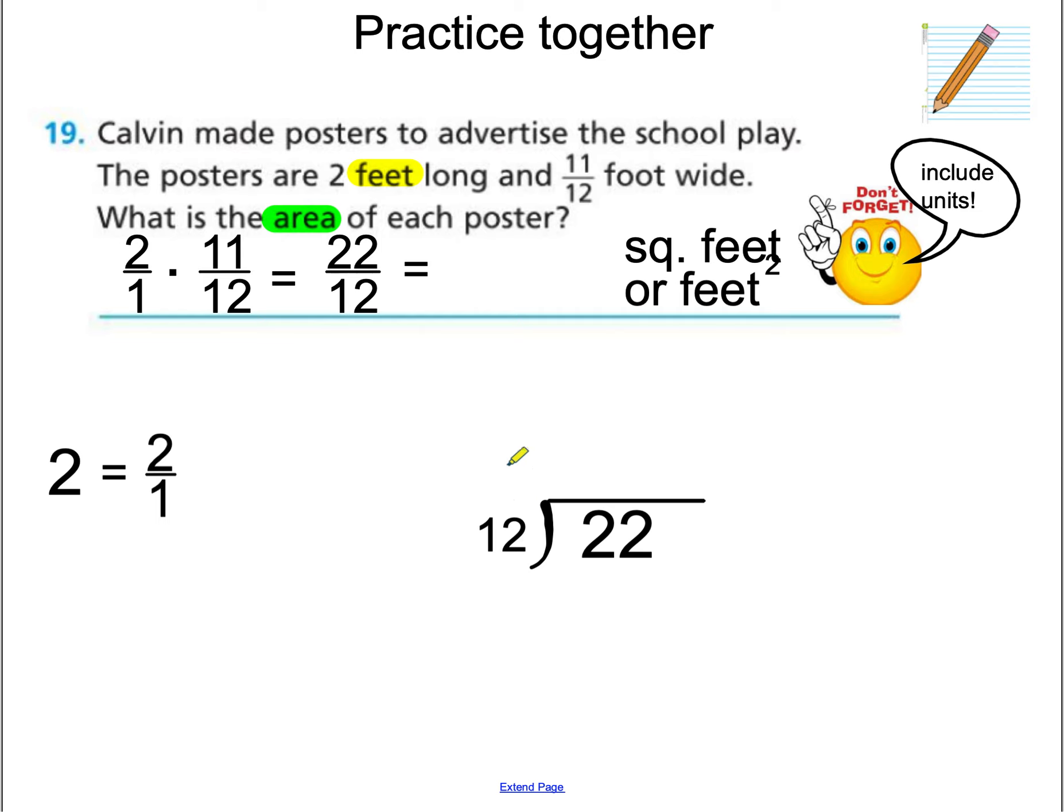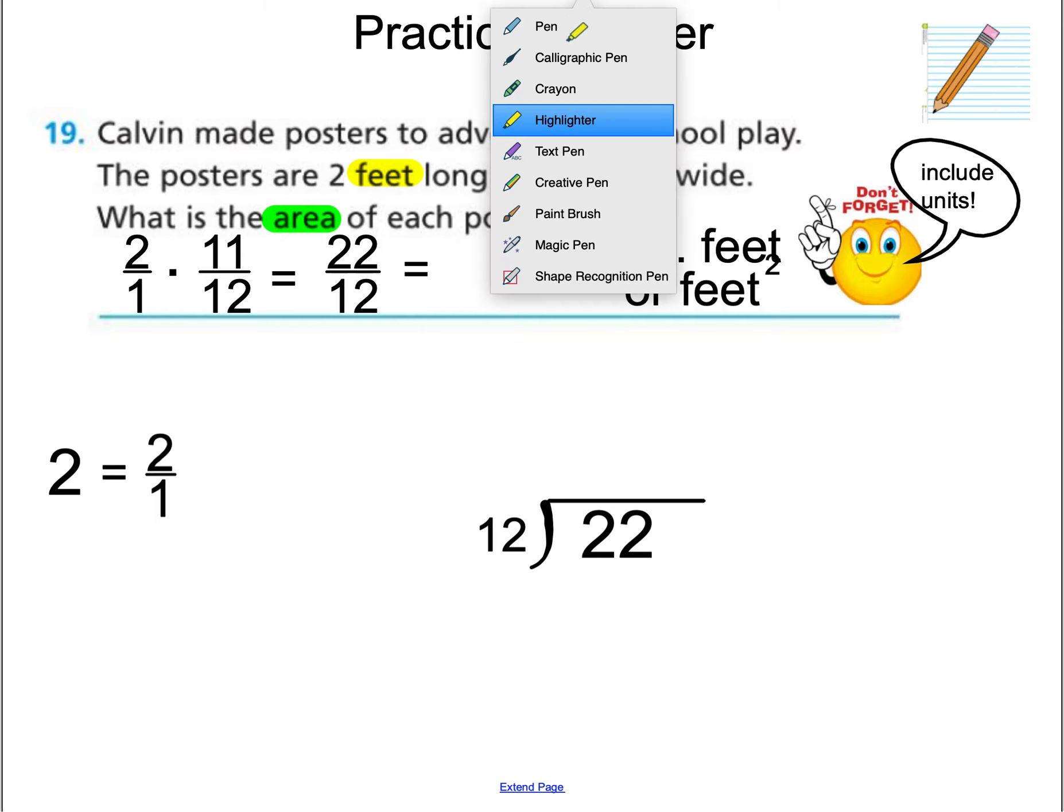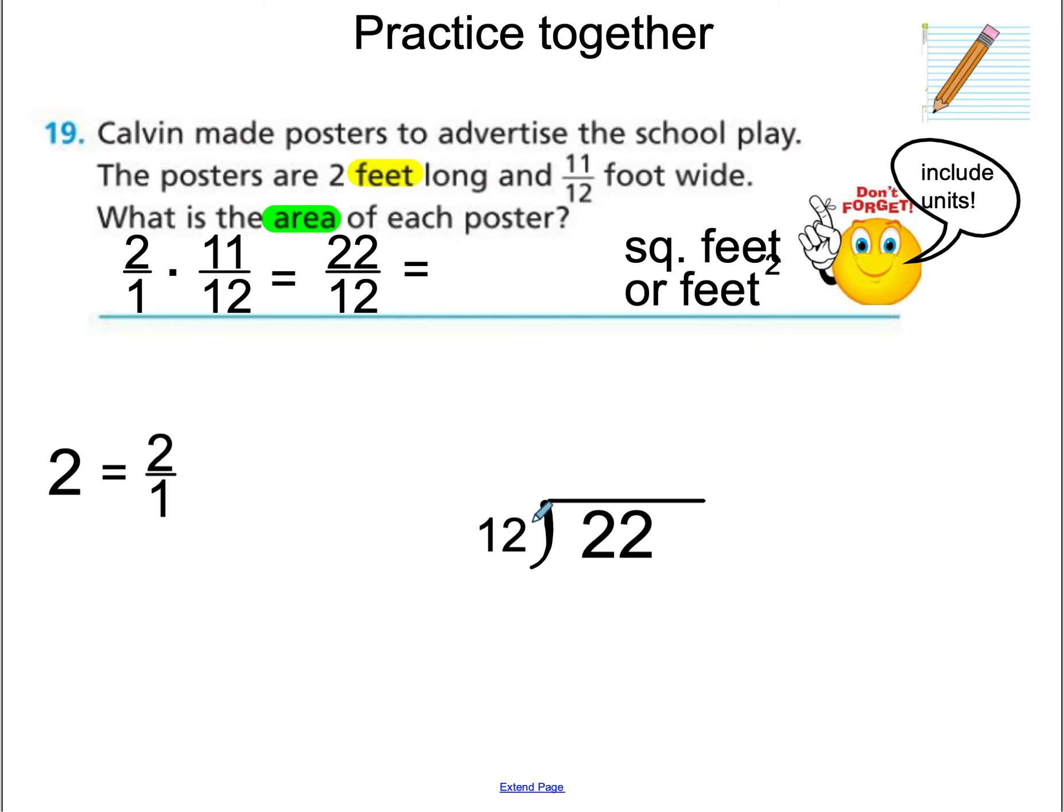The number on top goes in the box, and we divide it by our denominator. So when we divide, how many times can 12 go into 22 without going over? 12 facts are important. 12 times 1 is 12. 12 times 2 is 24. Oh, that's too much. So it's going to be a whole of 1. So our whole number is 1 foot something. Are we done?